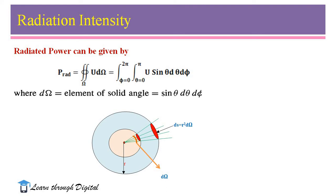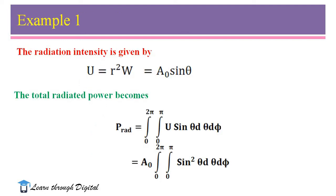Here, dS is the elemental surface, equal to R squared dΩ. So, if we know the radiation intensity of an antenna, from this we can calculate the power radiated by the antenna.